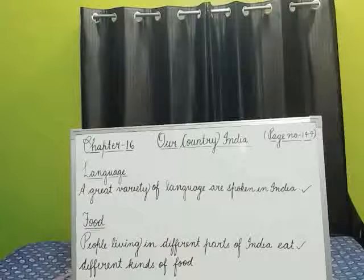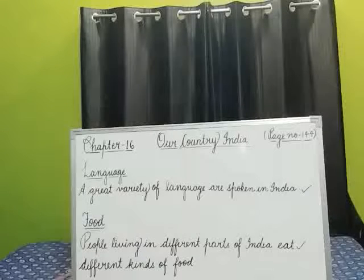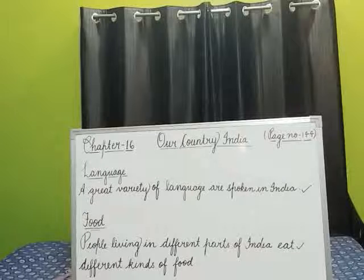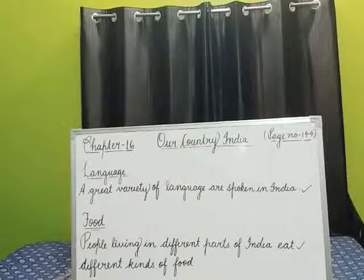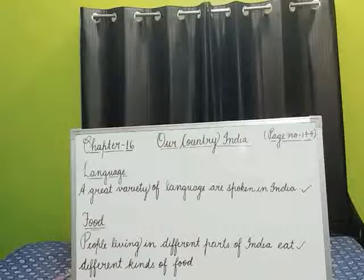Now, food habits. People living in different parts of India eat different kinds of food. In North India, wheat is the staple food — staple means main food — but people also eat rice. Maize, jowar, and bajra are commonly eaten in Rajasthan.